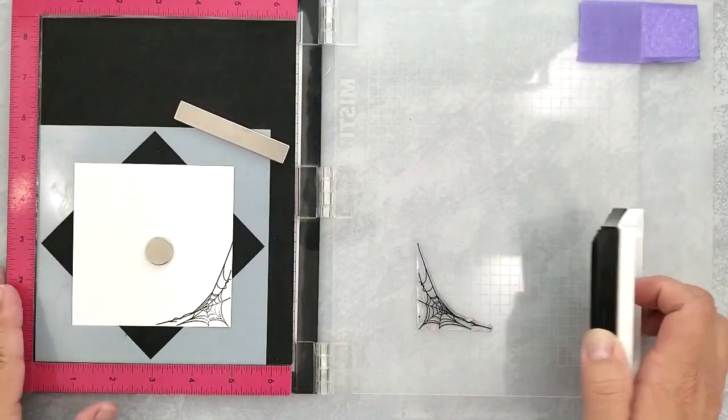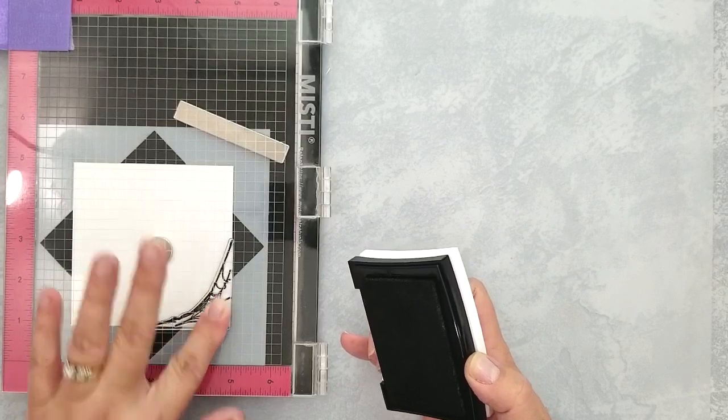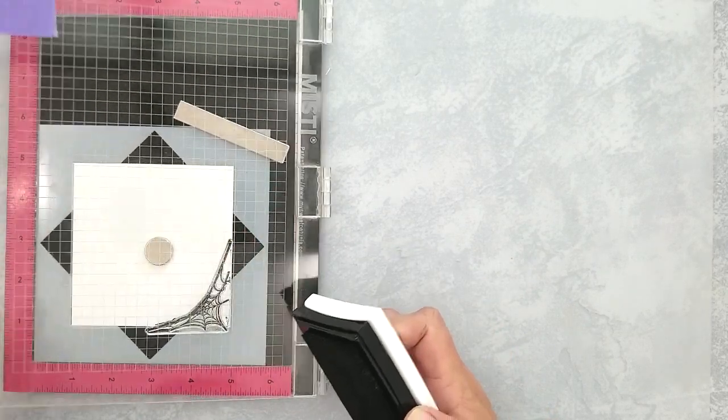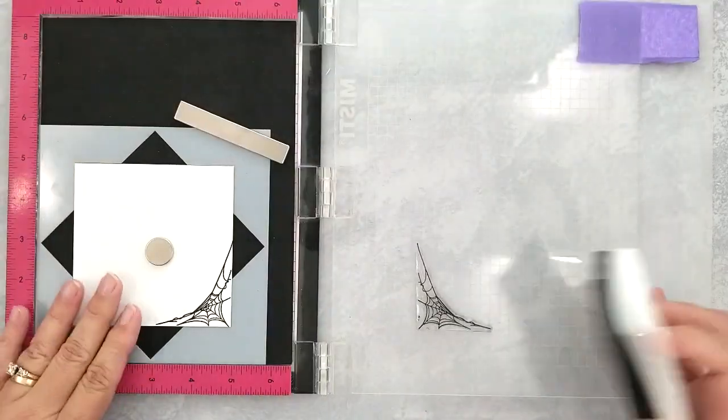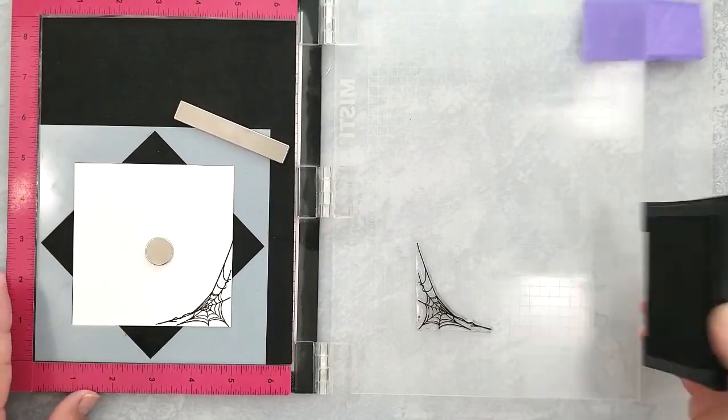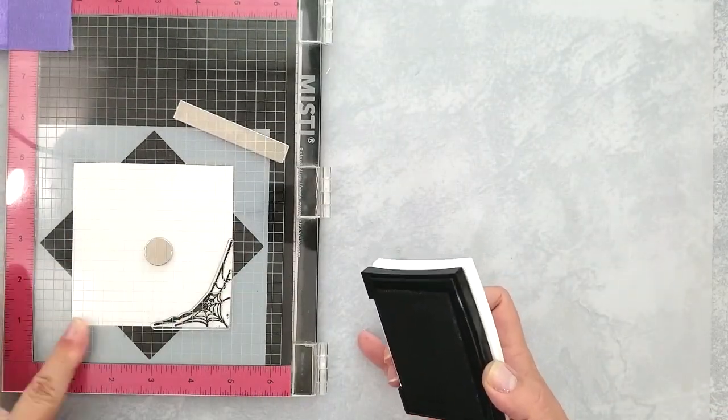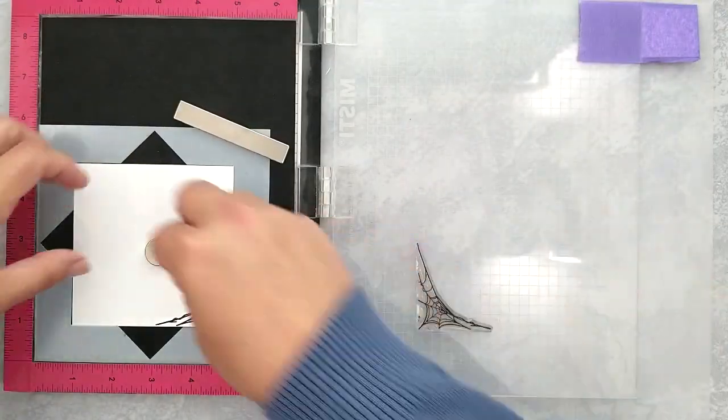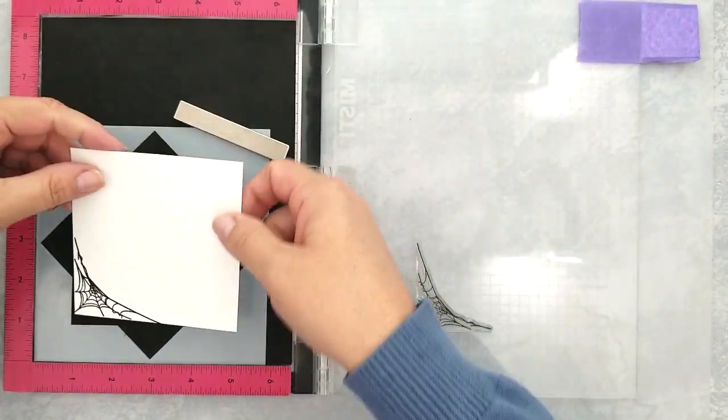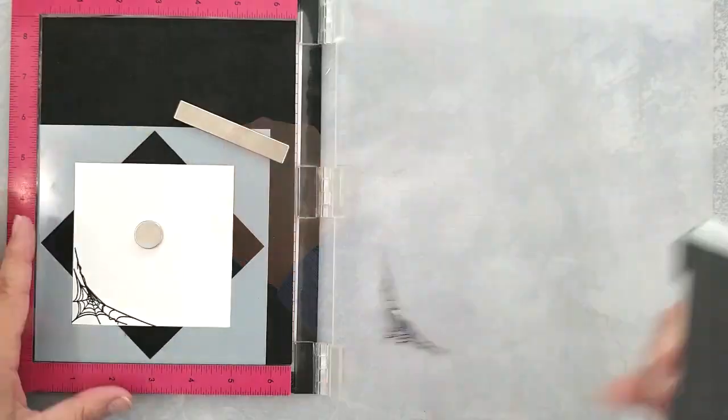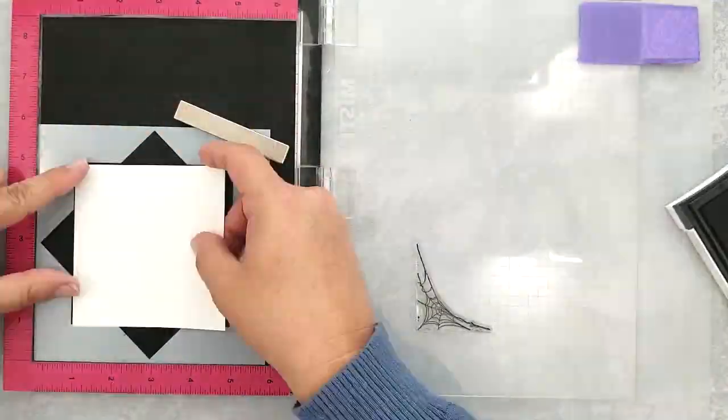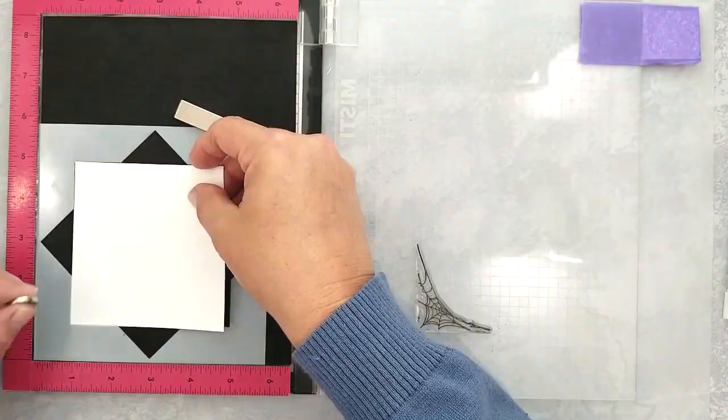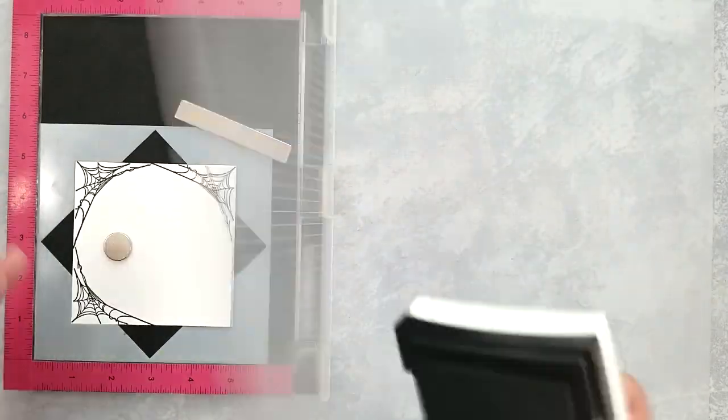I've cut five pieces of 80 pound cardstock to four by four inch squares using VersaFine Onyx Black ink. I stamp the cobweb several times just to ensure that I have a solid, crisp image. And then I turn the cardstock two turns and stamp again. We're going to repeat this process until we have all four corners stamped on all five pieces of cardstock.